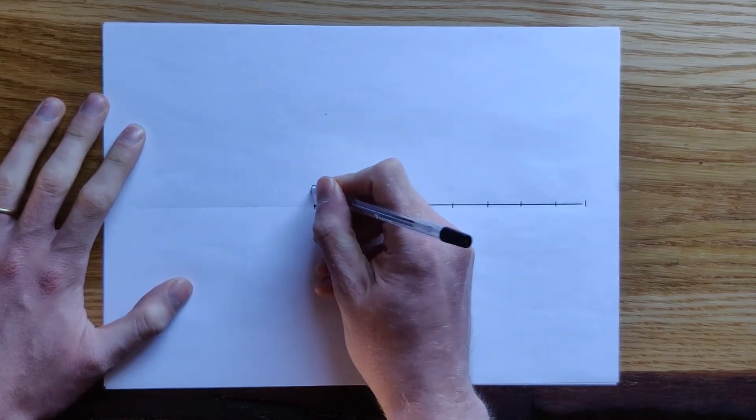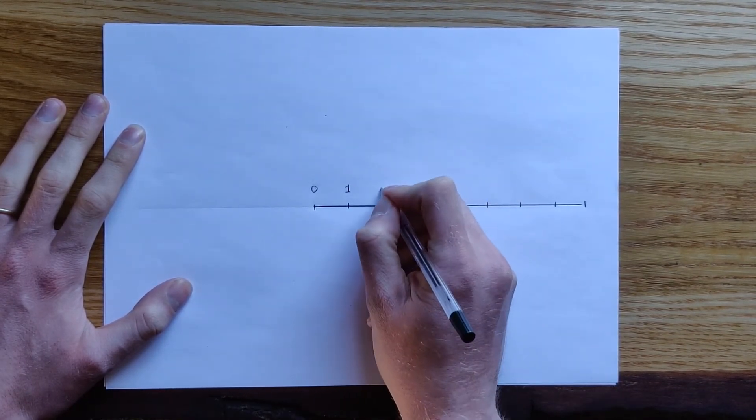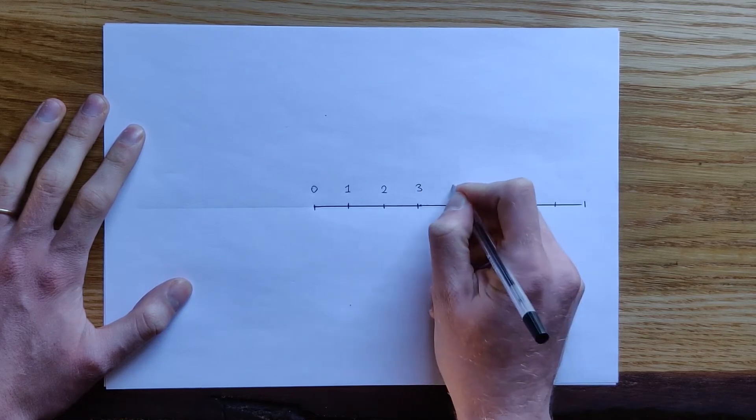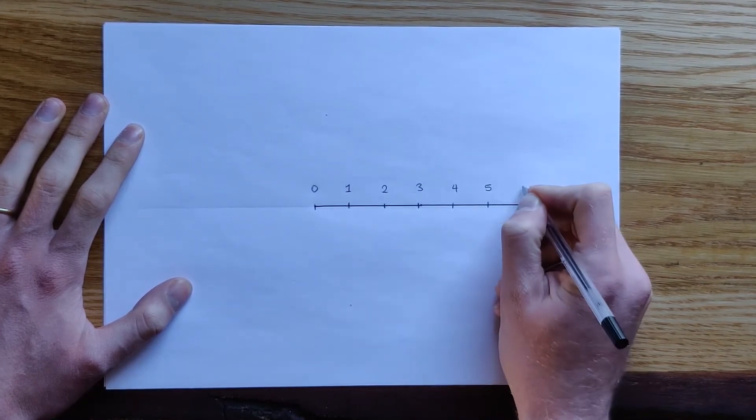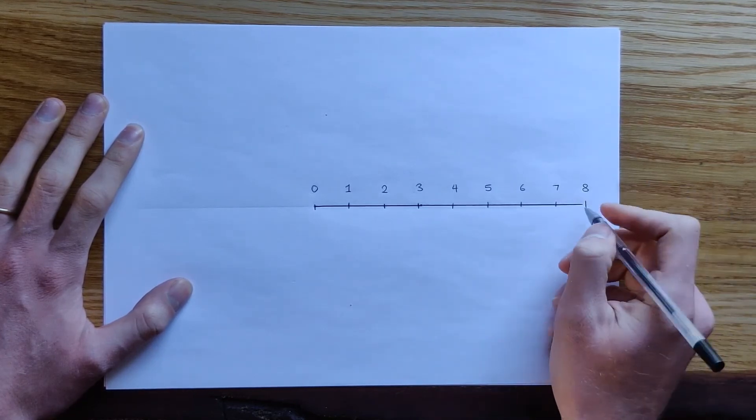So if we're going to start on zero, as we would with most number lines, our next number is going to be one, then two, three, four, five, six, seven, and then finally eight would go there.